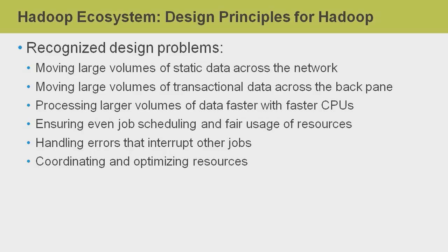I want to drive home the point of the design principles for Hadoop by comparing Hadoop's solution to those from earlier years. There is a common problem set, but it's how we attempted to solve this problem set that makes the difference. For example, in the 1990s, when we looked at the problem of how to move large volumes of static data across the network, we resolved this by building out multiple networks and trying to build faster and faster networks, even using direct fiber connections. When we looked at the problem of how to move large volumes of transactional data within the system across the back plane, we did this by trying to build faster I/O boards and building purposely designed back planes for connecting disk to I/O to CPU.